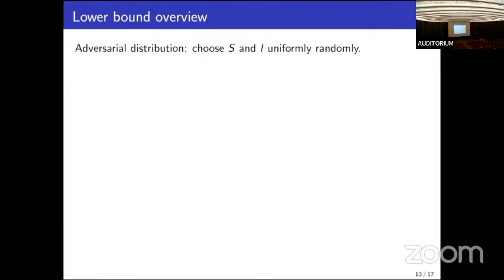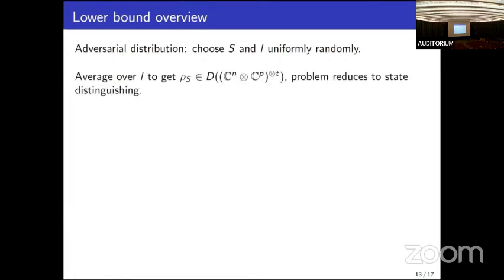In the quantum padded coupon collector problem you are not required to find l, so you can take the ensemble average over l to get rho_S, which is the ensemble average over t quantum samples across all different l's for a fixed S. With these rho_S states, the problem of quantum padded coupon collector reduces to state discrimination.